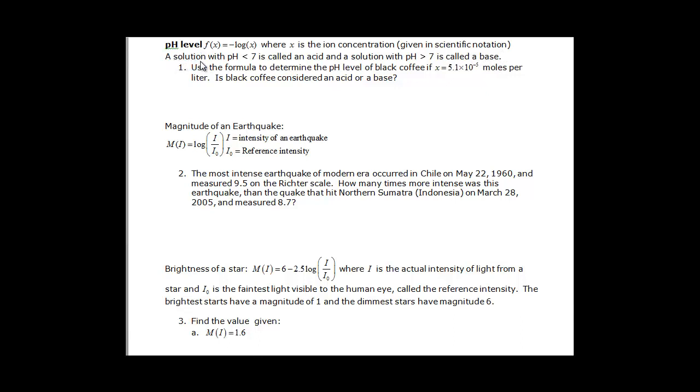We need to remember that the solution with the pH less than 7 is called an acid, and if it's greater than 7, then we know we have a base. This one asks us to determine the pH of black coffee where x is equal to 5.1 times 10 to the negative 5 moles per liter. And then we want to determine, is it an acid or is it a base?